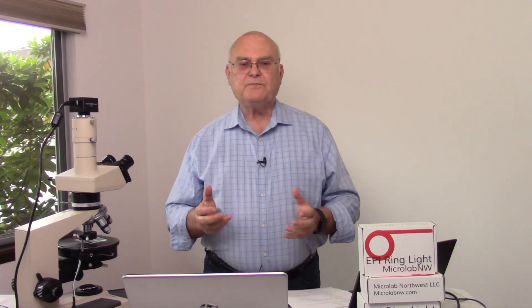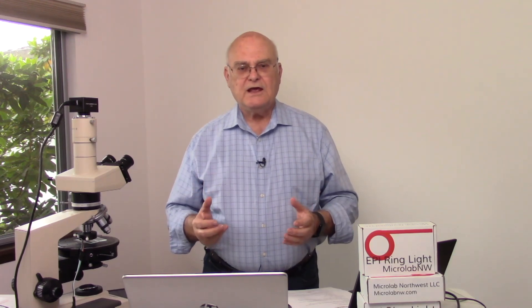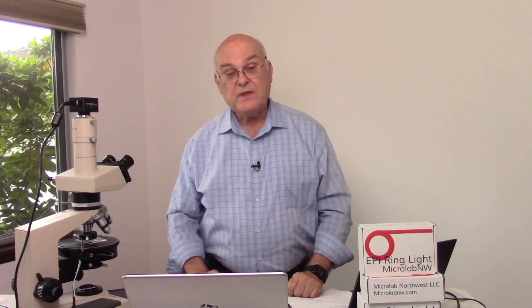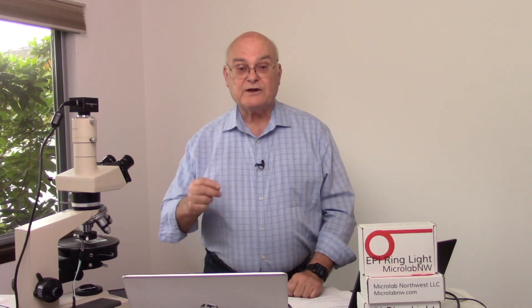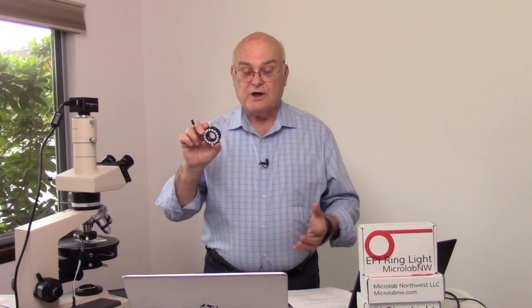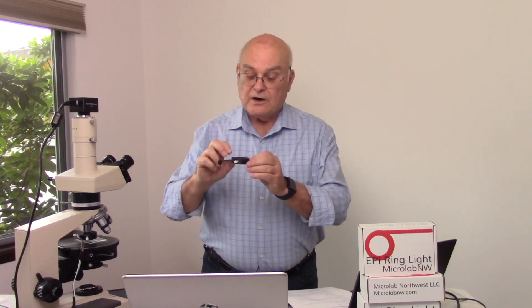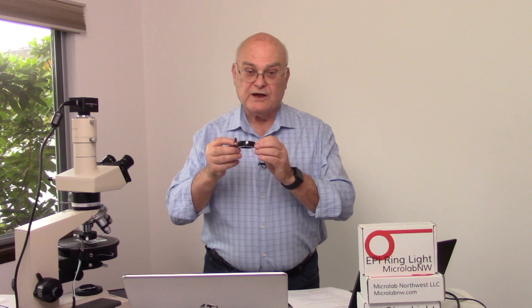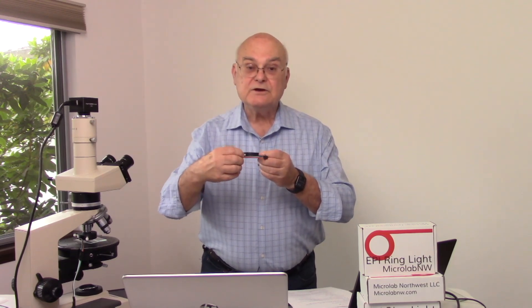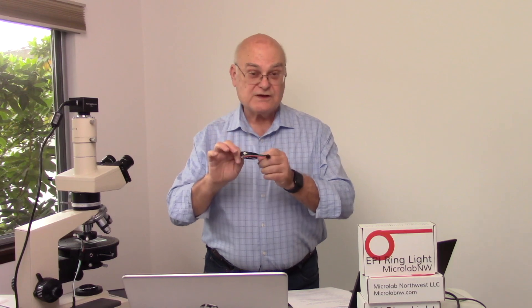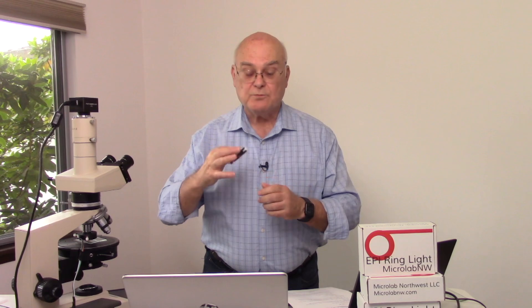One of the difficulties with getting reflected dark field illumination is that we don't have a nice, inexpensive, affordable attachment to provide it. Well, we designed one. This is a ring light that fits around most standard objectives. We can fit it around the transmitted light objective, position it to optimize reflectivity off our specimen, and then use nylon nuts to tighten it in position so that once it's fixed we can go from one sample to another and get the same reflectivity.